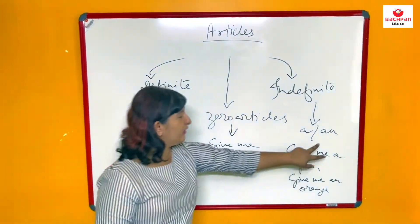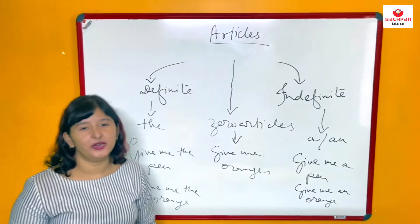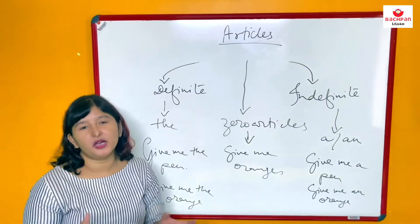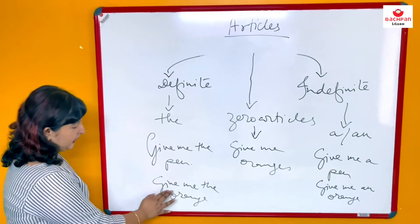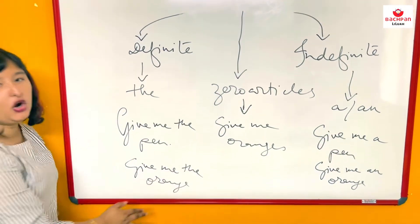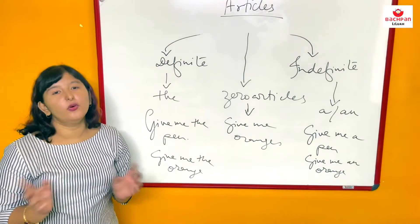Similarly if I use an, give me an orange. An orange can be any orange. You can just pick up an orange from the basket and you can give it to me. But if I say give me the orange means that particular orange I want and no other orange.